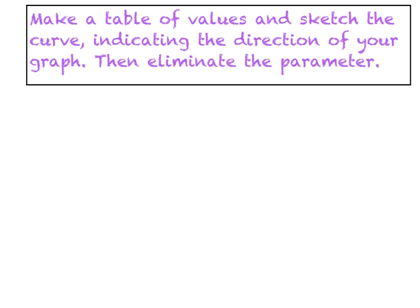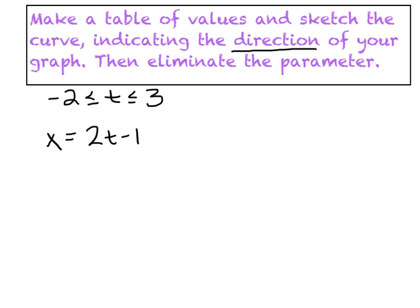We're going to jump into our first example using the same set of directions for all four examples. They're asking us to make a table of values, sketch the curve indicating the direction of the graph — that's very important — and then practice eliminating the parameter, which is just another way of saying convert your equation from parametric into rectangular form. For this one, we'll graph from negative 2 to 3 for t. The two equations are x equals 2t minus 1 and y equals 1 minus t.